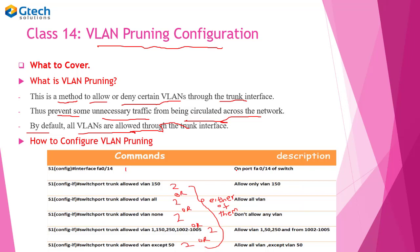Assign the VLANs to interfaces. Let's assume we have assigned VLANs to interfaces, and interface FA0/14 is our trunk interface. A VLAN pruning method is configured on the trunk interface — remember this.